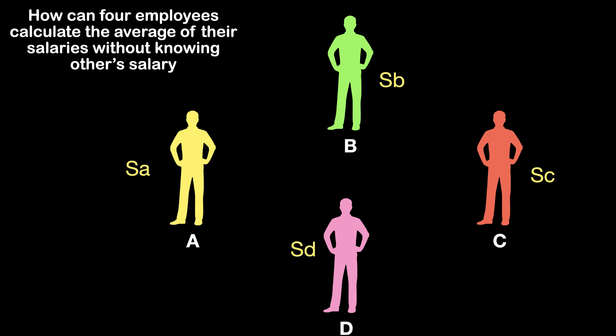In the first step, A adds a random amount, say Ra, to his own salary and gives that to B. B won't be able to know A's salary as he has added a random amount known to him only. In this case, B will receive the figure Sa plus Ra from A.